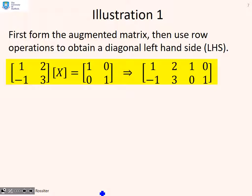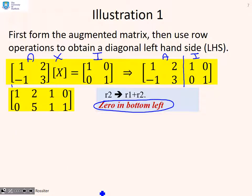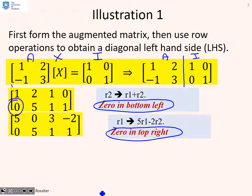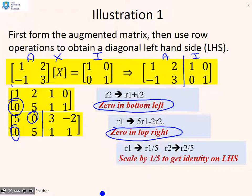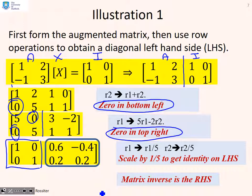Here is the first illustration. We have a matrix A times an unknown matrix X equals the identity matrix. The augmented matrix is A augmented with I. The first step is to put zeros in the first column using a row operation: row 2 becomes row 1 plus row 2, giving a zero there. Next, a row operation creates a zero in the top right, so the left-hand part of the augmented matrix is now diagonal. We then divide by 5 throughout to make the diagonal components 1, giving us the identity on the left — and the right-hand part is the matrix inverse.